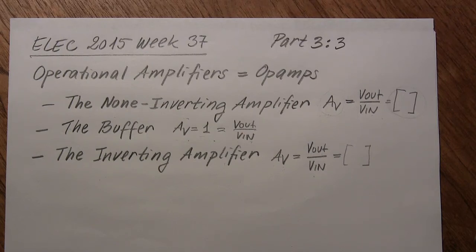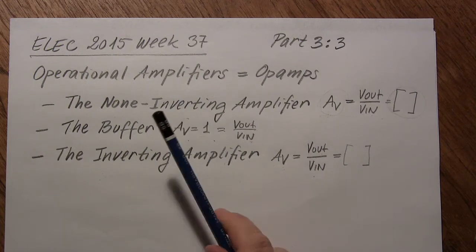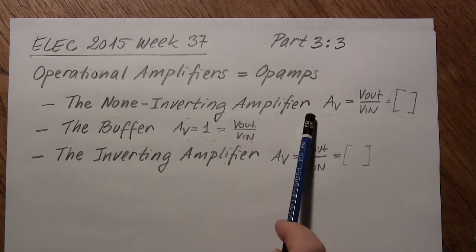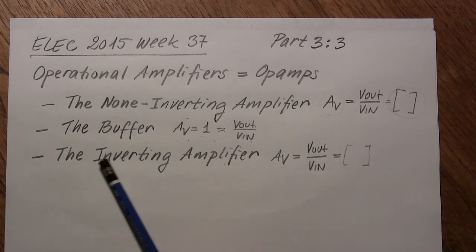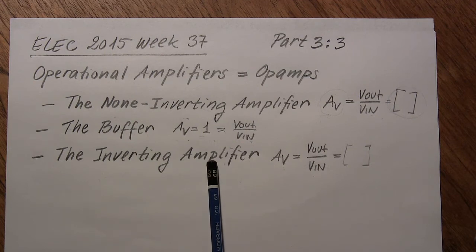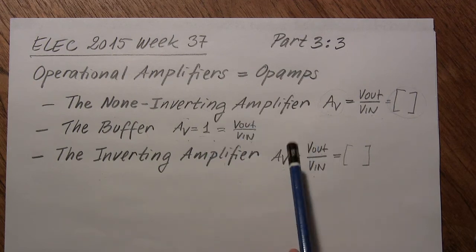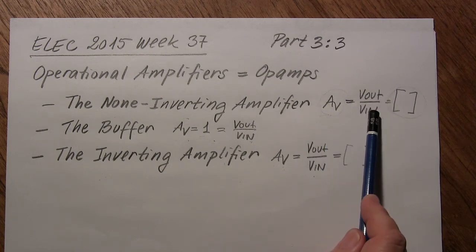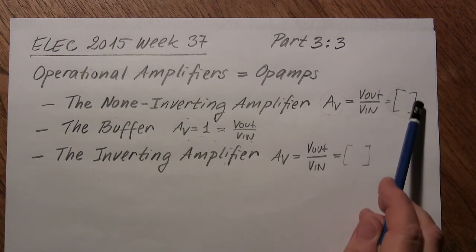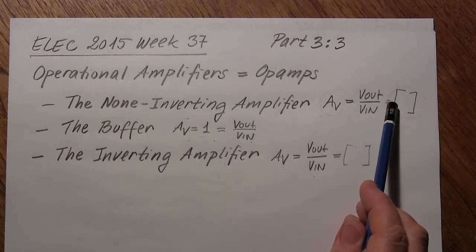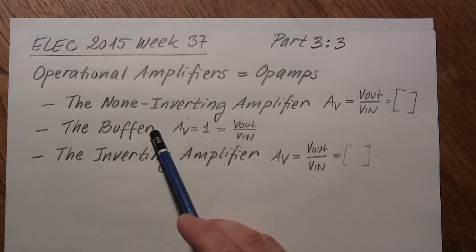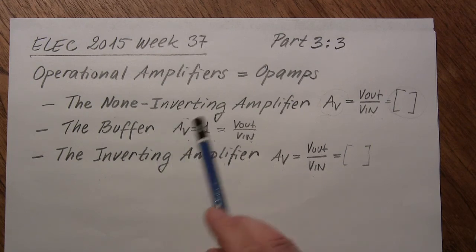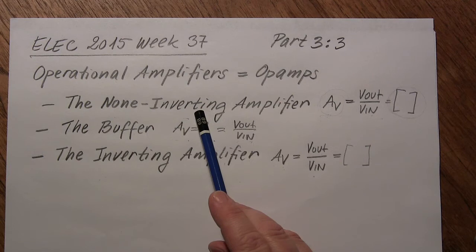Welcome to part 3 of ELEC week 37. Now we are going to look at 3 classic amplifier circuits: the non-inverting amplifier, the buffer, and the inverting amplifier. We are going to try to find an expression for the voltage gain, Vout over Vin, and we hope to find an expression related to the circuit components. We are also going to look at the buffer, that is a special case of the non-inverting amplifier.